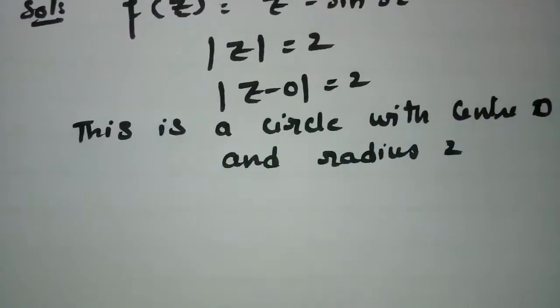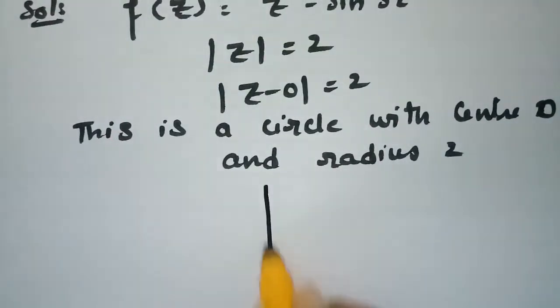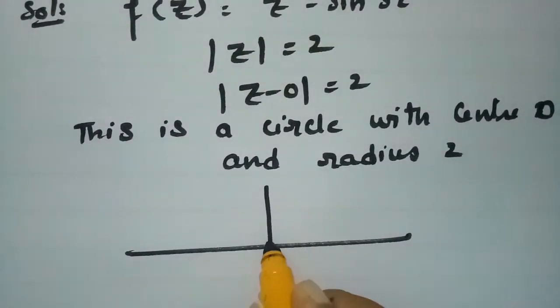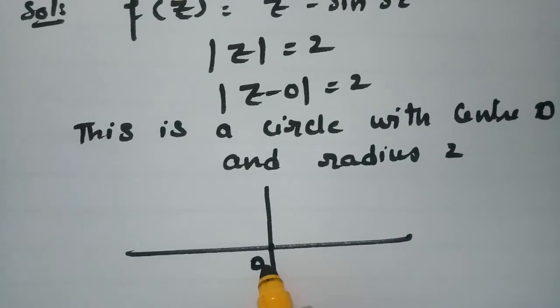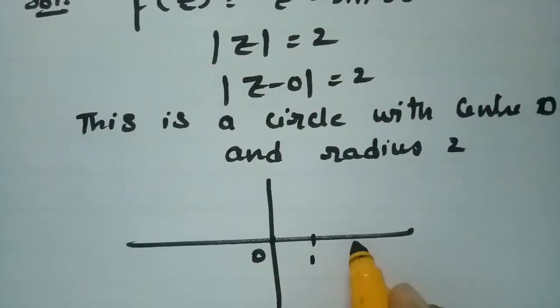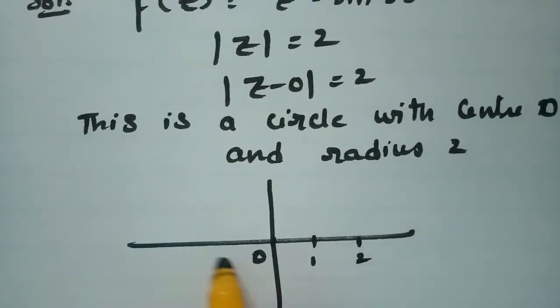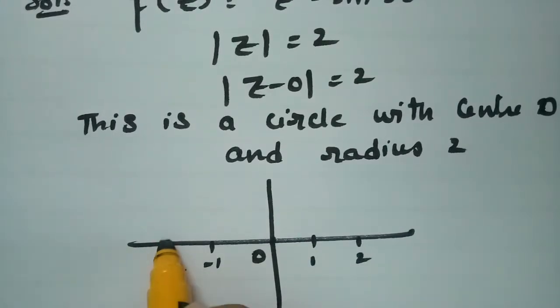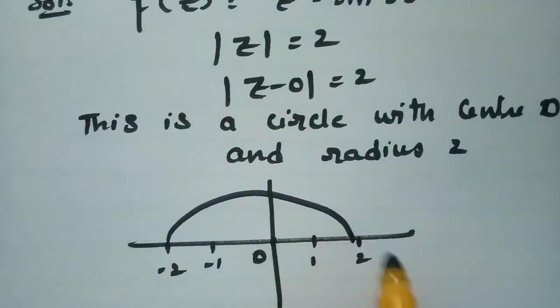Observing the diagram, the origin is the center point and the radius is 2, so we mark 1 and 2 on the positive x-axis, and −1 and −2 on the negative side. This defines our circle.